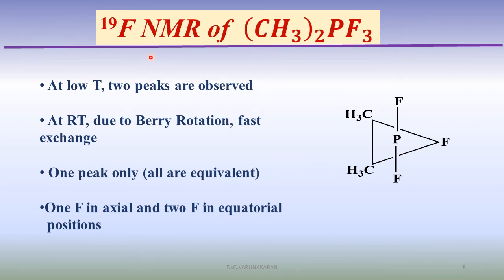In fluorine-19 NMR, the structure of dimethyl phosphorus trifluoride is elucidated. At low temperature, two peaks are observed. At room temperature, due to Berry rotation fast exchange, only one peak is observed. All are equivalent, one fluorine in axial position and two in equatorial position. Using NMR, this structure is established.